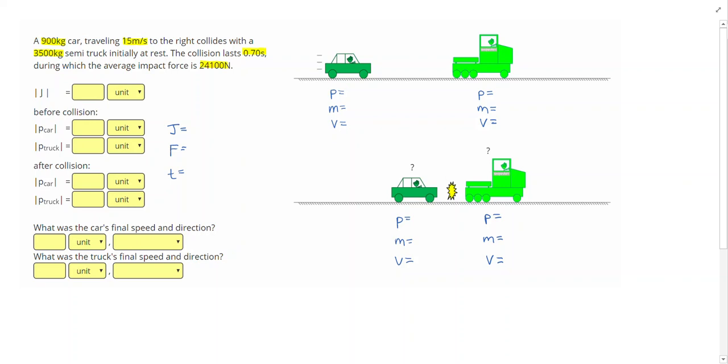Alright, let's start filling out some givens. So our car is 900 kilograms, so I can go ahead and write that down for the mass of the car in both cases. And the car is initially traveling 15 meters per second to the right, so that is the velocity at the initial time. And again, that doesn't change during the collision, so I can write that in for both masses. And it says the truck is initially at rest, so this initially at rest, also I don't see any motion lines right here, so that tells me that my truck's initial velocity is zero.